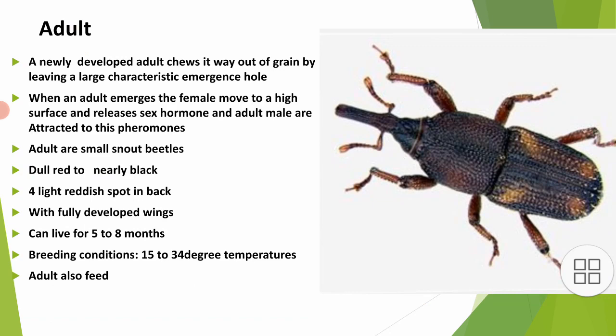Four light red spots are found on the back of the adult. They can live for five to eight months — Sitophilus zeamais adults are long-lived, surviving five to eight months.